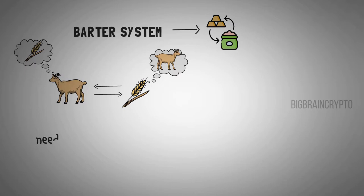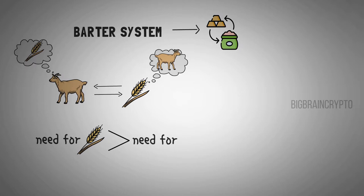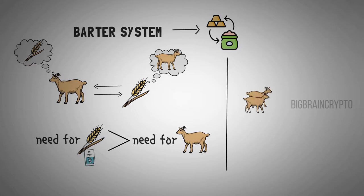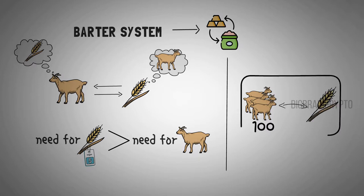Not exactly. Trade arises from need. In case your need for grains is much higher than that person's need for a goat, naturally he has the upper hand and gets to fix the price. He might demand 100 goats in return for a small pouch of grains. Does it seem fair now? You're right, it's unfair and irregular.